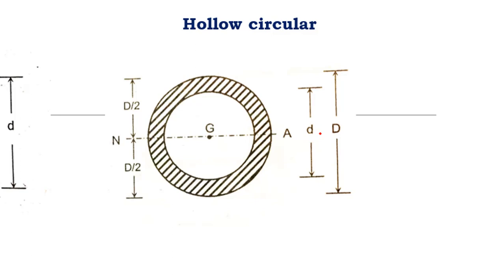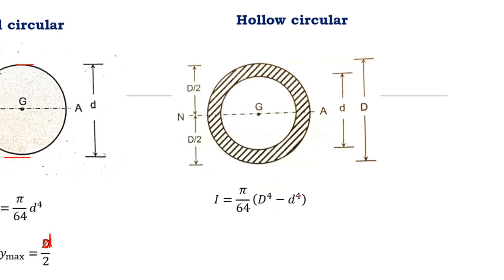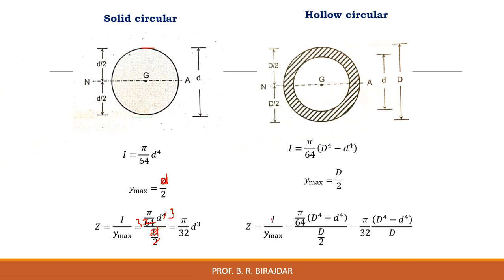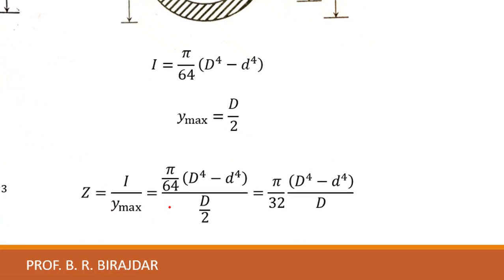For the hollow circular section, the outer diameter is capital D and the inner diameter is small d. The neutral axis is at the center, so the distance to the outermost layer is D/2. The moment of inertia is π/64 × (D⁴ − d⁴). Dividing by y_max = D/2, the 2 brings 64 down to 32, giving the section modulus Z = π(D⁴ − d⁴)/(32D).